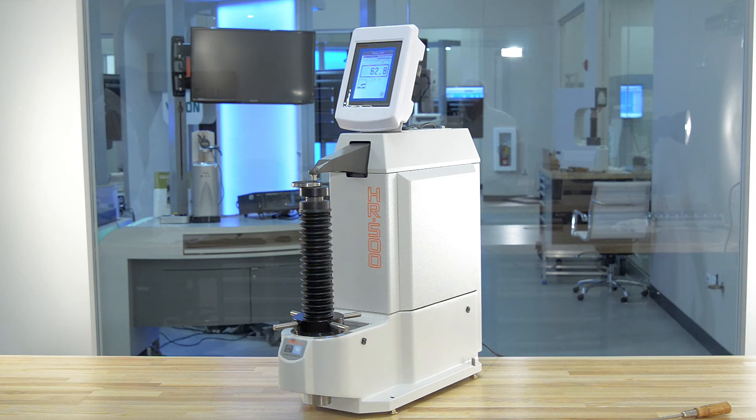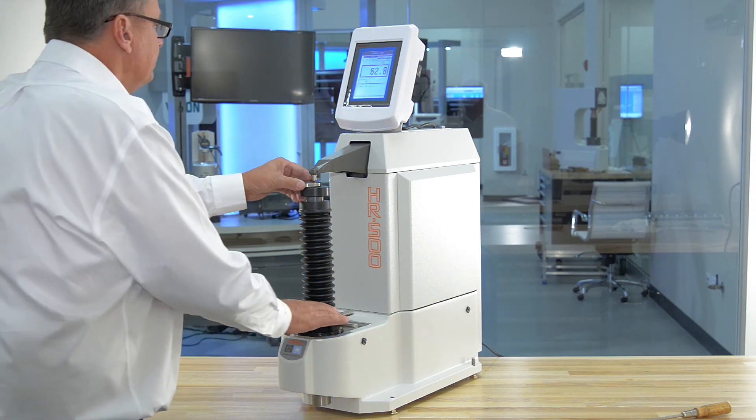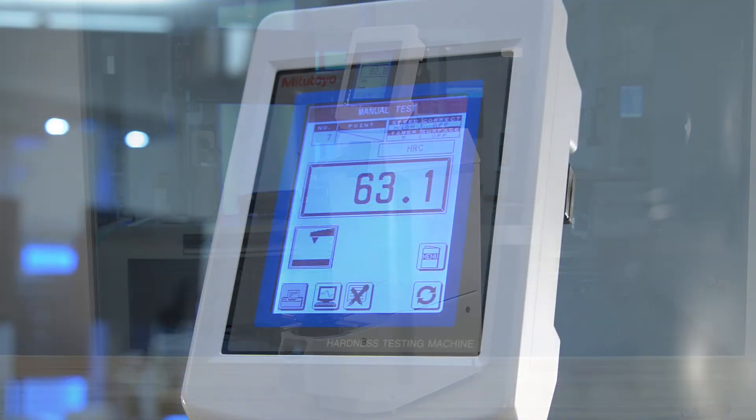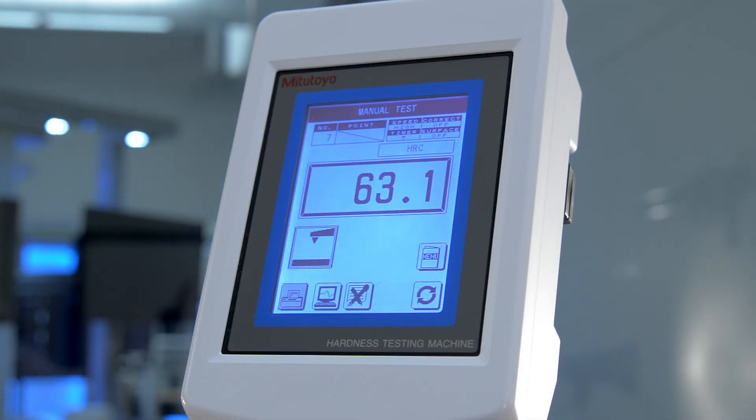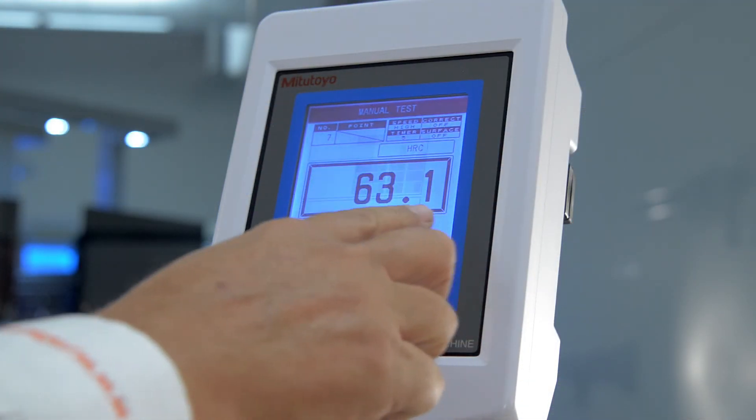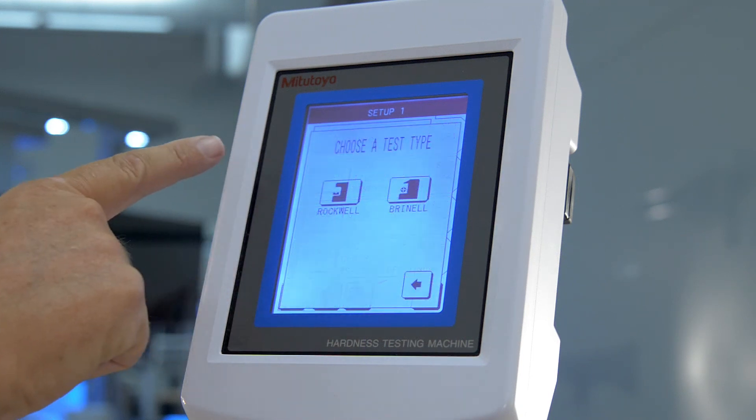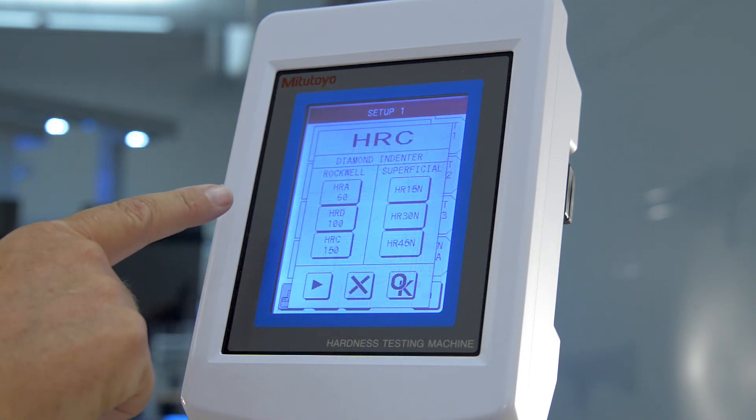The closed loop loading design does all the work of changing the scale for the operator except change the indenter. Simply select the scale from the menu and all scales are selected based on the indenter type so changing from HR-C to HR-45N is on the same screen.